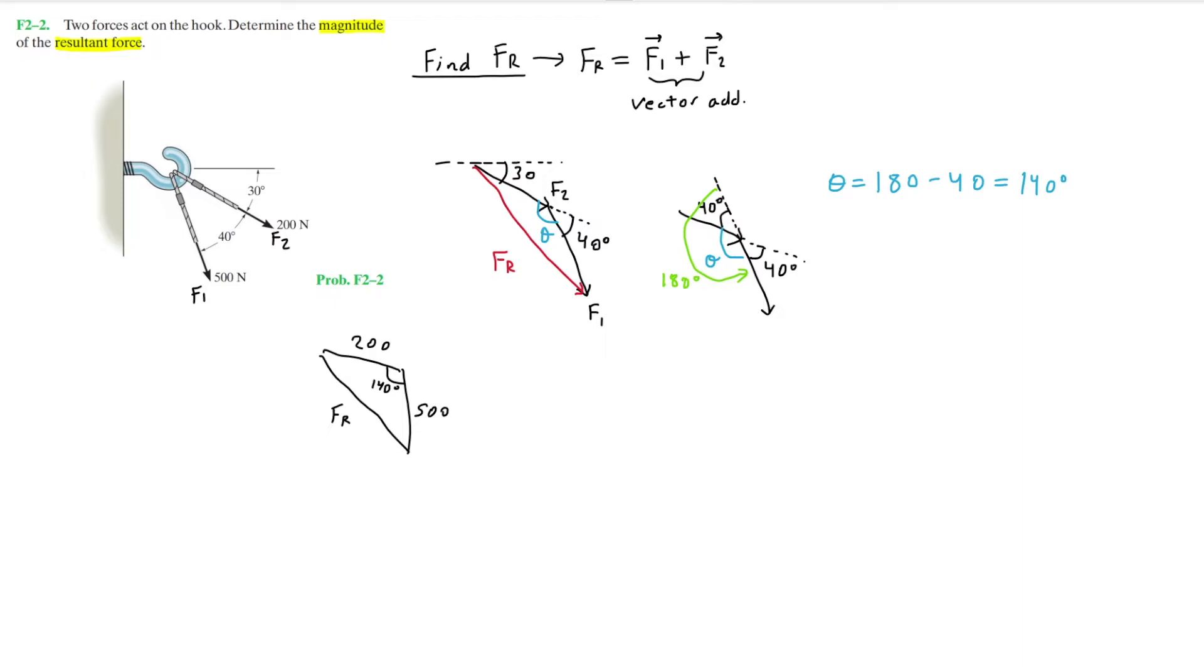And so which rule can we apply to help us find Fr? Since Fr is across from the 140 degrees, we can go ahead and directly apply the cosine law to solve for the resultant force.